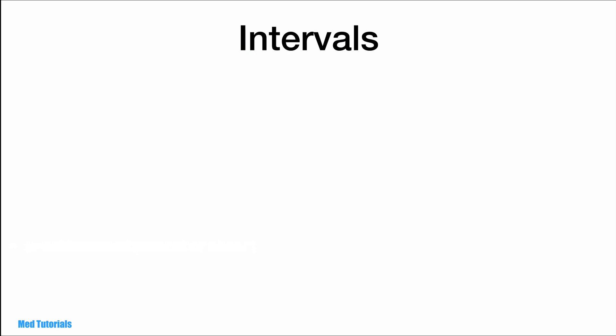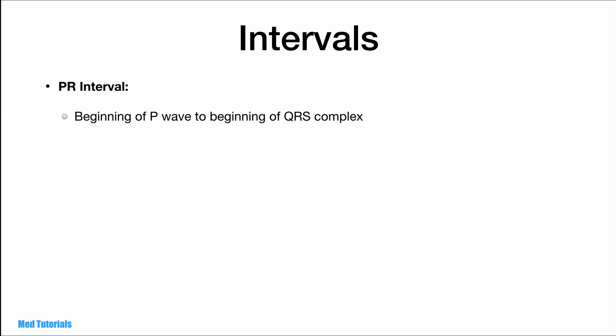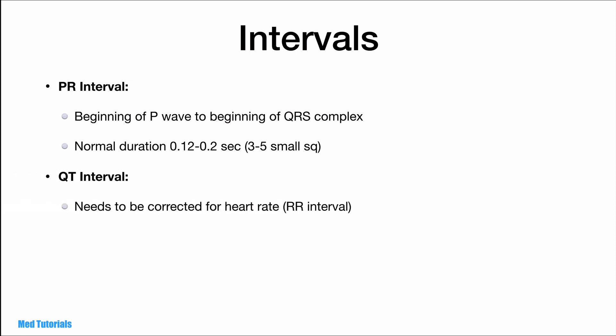Coming to the intervals — these are the components that are usually measured objectively in an ECG. First, we have the PR interval, measured from the beginning of the P wave to the beginning of the QRS complex. The normal duration is 0.12 to 0.2 seconds, that is 3 to 5 small squares. The second interval is the QT interval. For interpretation, it is important to correct the QT interval for heart rate. The corrected QT interval equals the measured QT interval divided by the square root of the RR interval. The normal duration is 0.33 to 0.44 seconds.